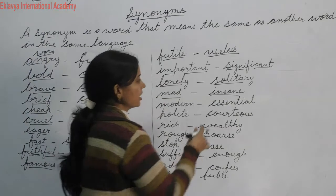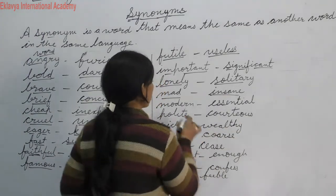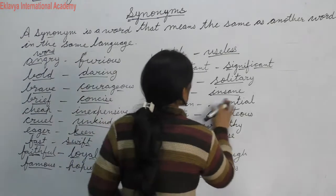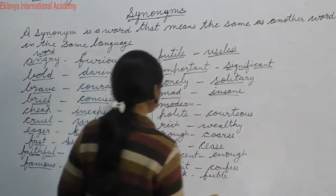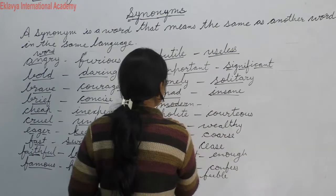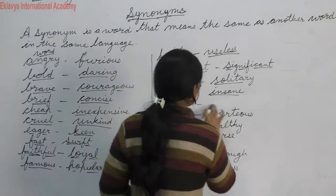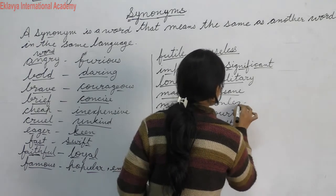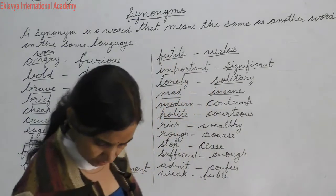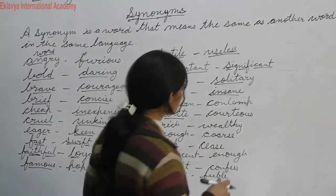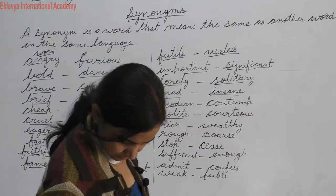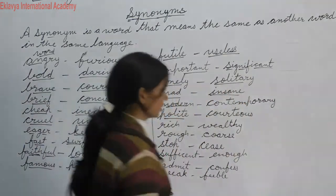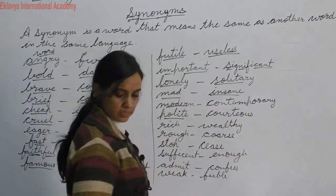Lonely means akelapan — its synonym is solitary. Mad means paagal, jisme samajh nahi hoti — another word for mad is insane. Modern means contemporary — that is another word for modern.